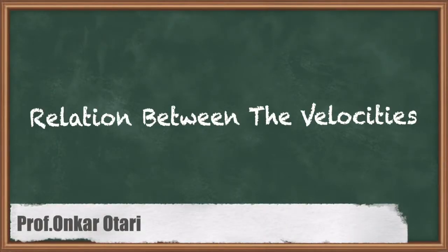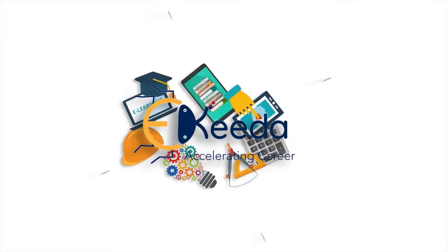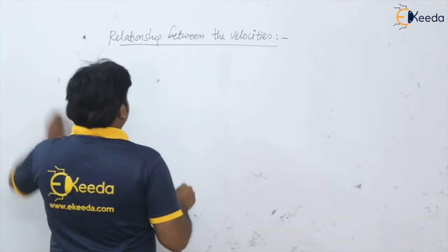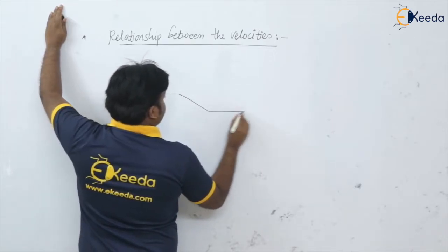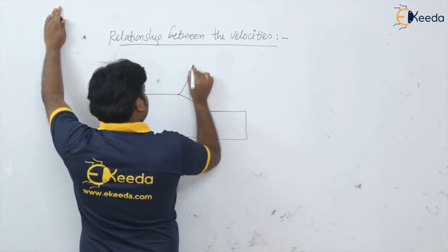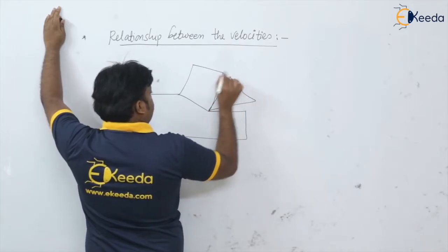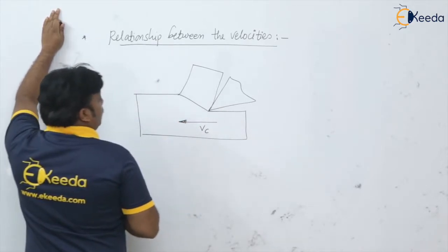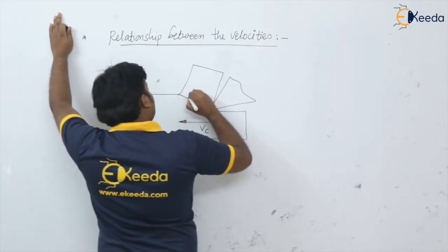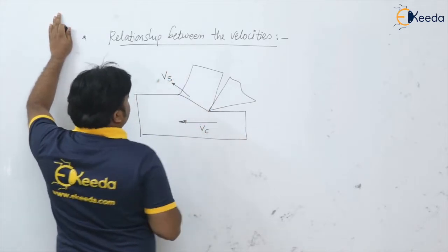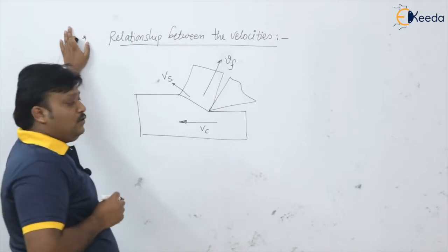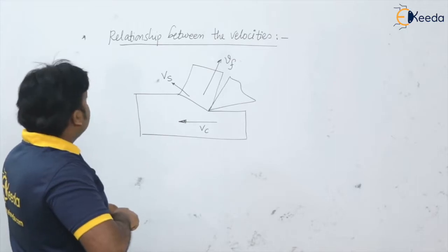Welcome students. In this video we are going to see the relationship between the velocities in metal cutting. We have three velocities: cutting velocity, shear velocity, and chip flow velocity. This is the tool, this is the chip, and this is the workpiece. The velocity of the tool with respect to the workpiece is the cutting velocity. The velocity along the shear plane is the shear velocity Vs, and the velocity of the chip with respect to the tool is the flow velocity or chip velocity.